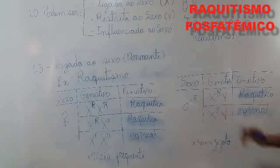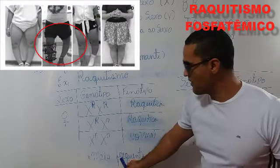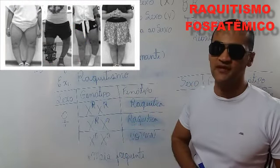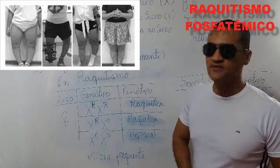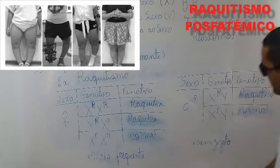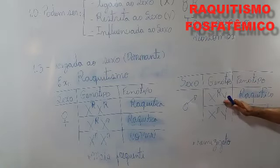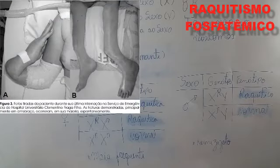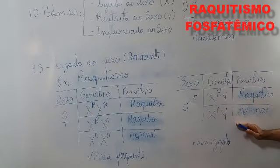Observando as tabelas aqui, podemos observar que o raquitismo é mais frequente nas mulheres. Pois elas têm 75% de serem raquíticas e apenas 25% de serem normais. Já no homem, nós teremos 50% de ser raquítico e 50% de ser normal.